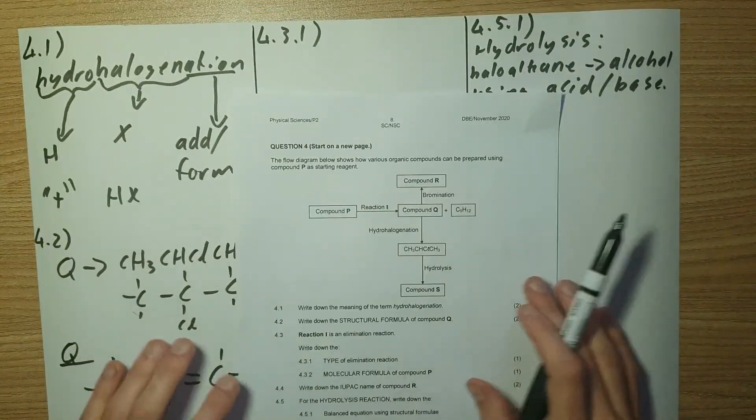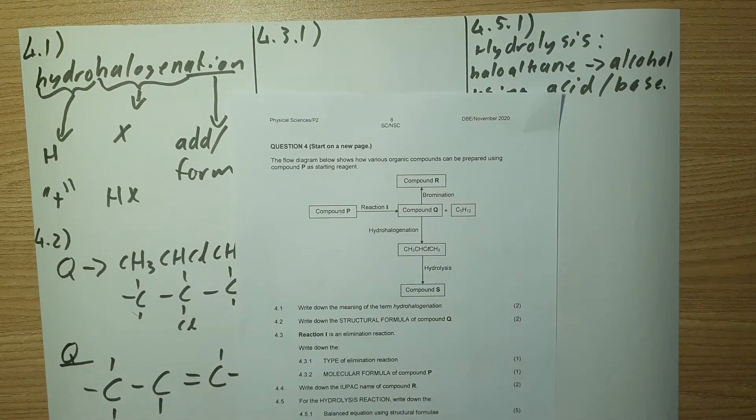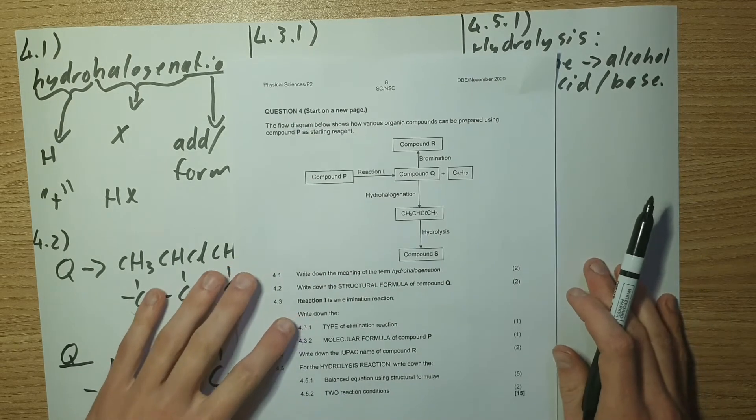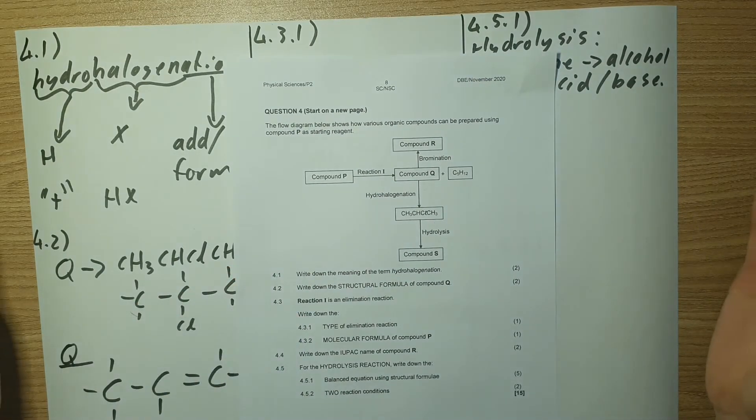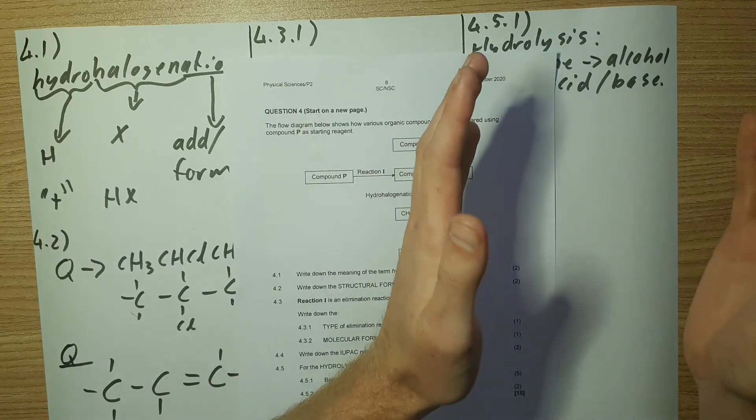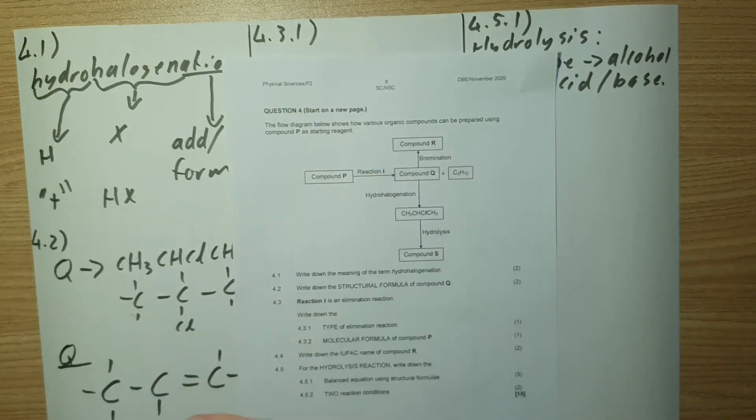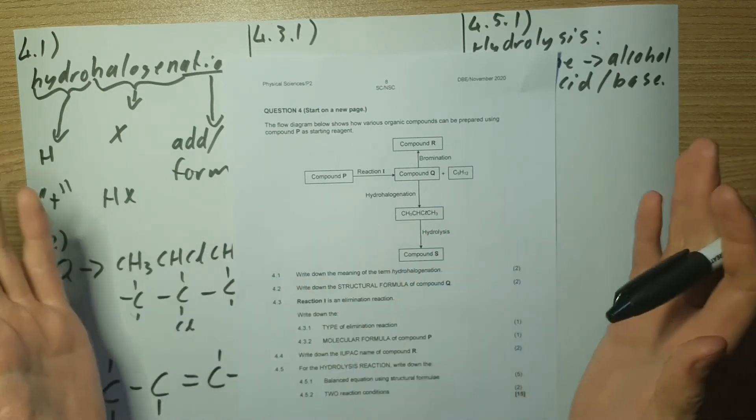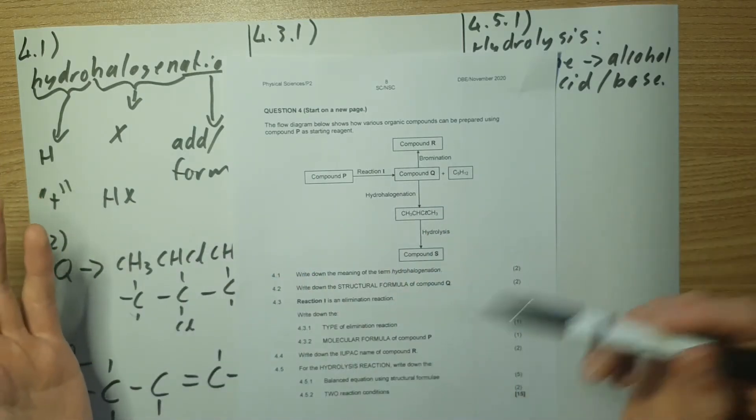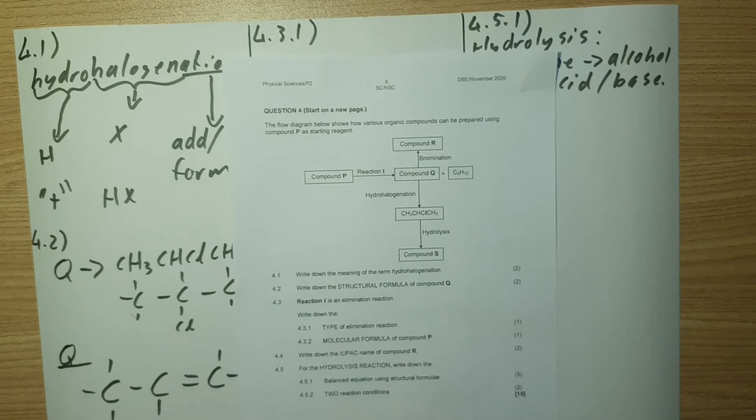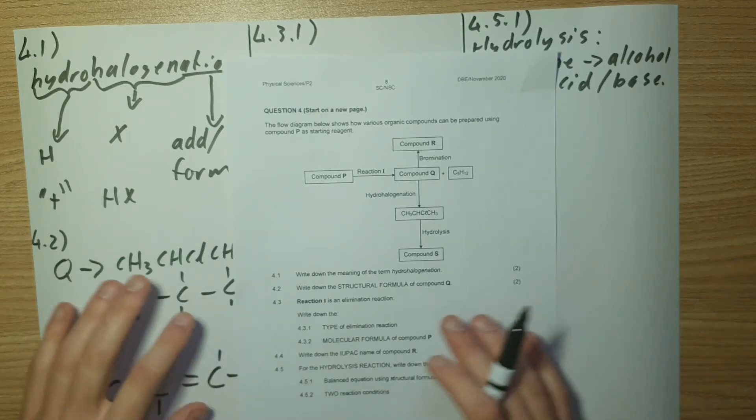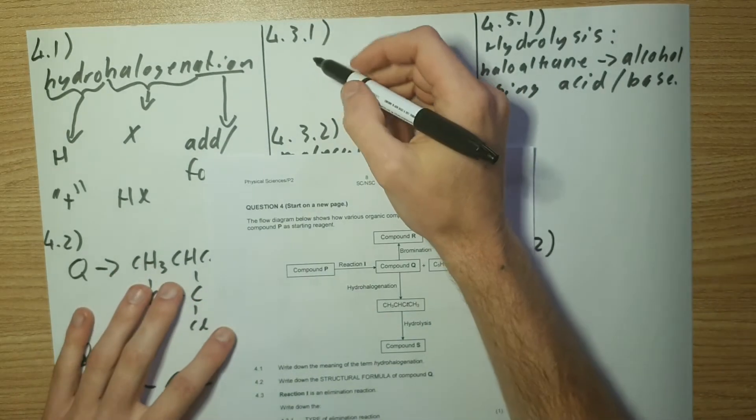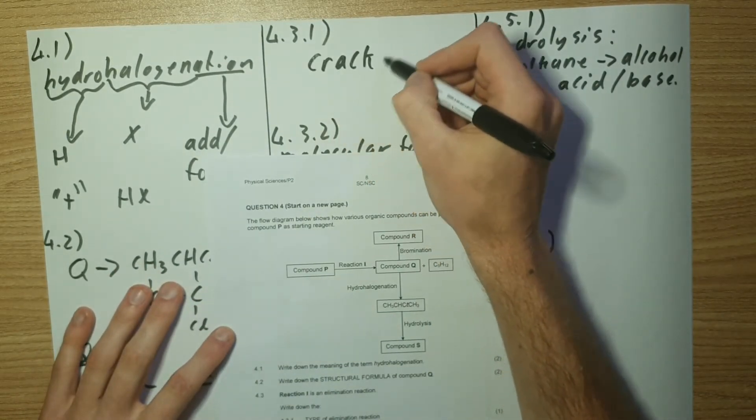When we break up long chains it's called cracking. So that's what's taking place here. We've taken a long chain and we've broken it up into two smaller segments. One of them will have a double bond in it to account for the splitting, because we don't have another hydrogen, we're not adding in a hydrogen to fill the gap or anything like that. So one will have a double bond between the carbons. This process is known as cracking.